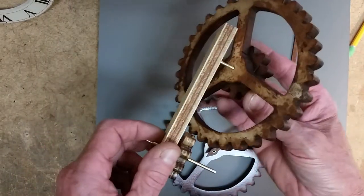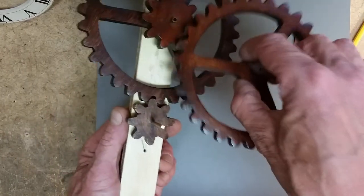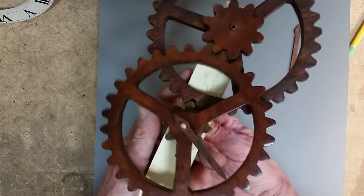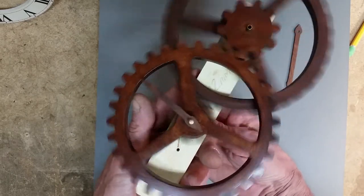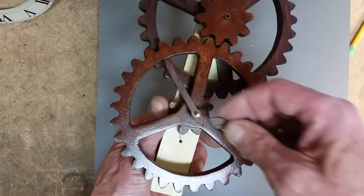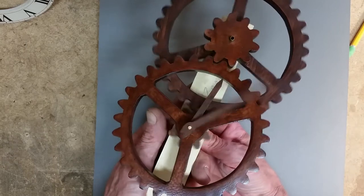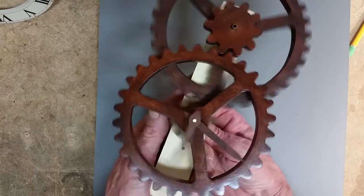Now this minute pinion is driving the hour wheel which is driving the hour hand. So I put the minute hand back on there and we can see that it is turning correctly. There's one o'clock, two o'clock, three o'clock, four o'clock and so on.